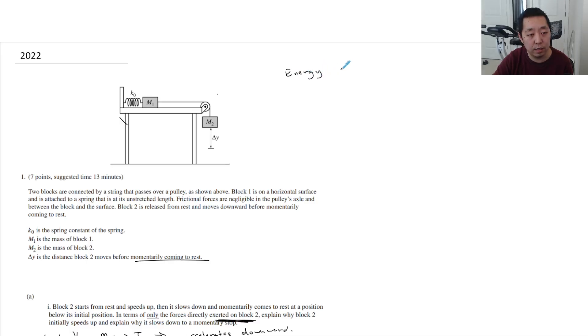Energy of the blocks plus spring plus earth system. So before, let's talk about all of them. Before we release it, the spring potential energy is zero because the spring is not stretched.